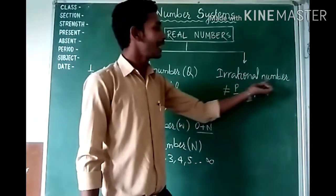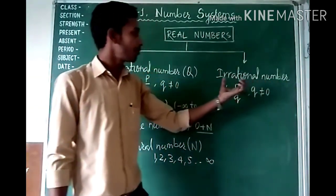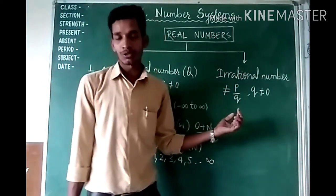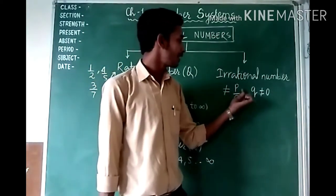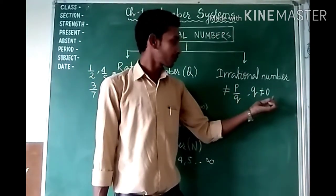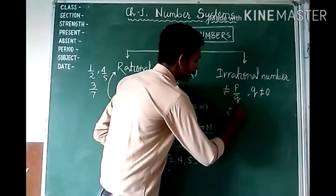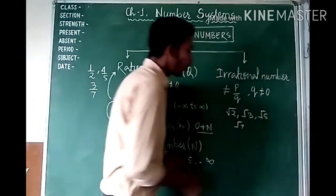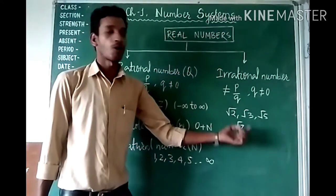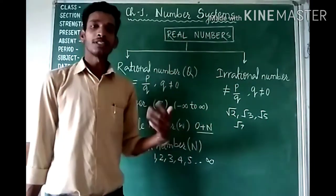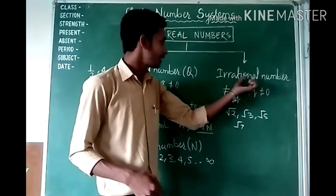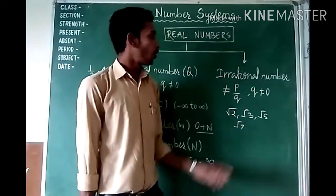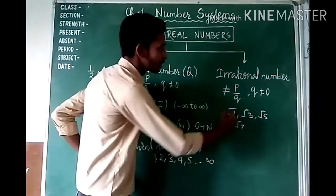Next, we will discuss irrational numbers. These are numbers which are NOT in the form of P by Q, where P and Q are integers and Q is not equal to 0. All that kind of number is called an irrational number.